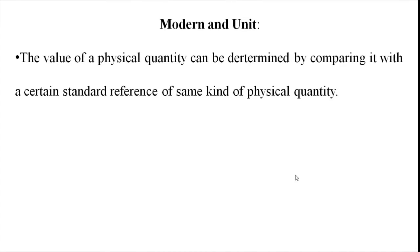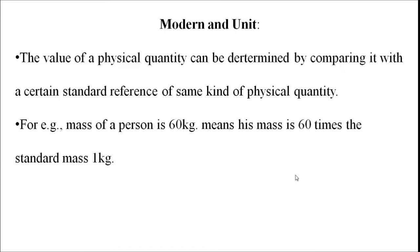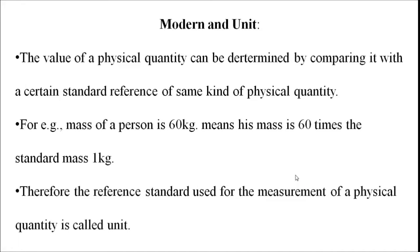For example, the mass of a person — if we say the mass of a person is 60 kg, it means his mass is 60 times the standard mass, which is 1 kg. Therefore, the reference standard used for the measurement of a physical quantity is called a unit.